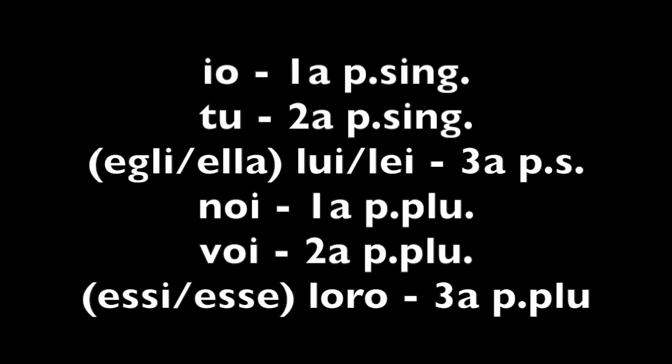Let's have a look at all the personal pronouns subject: Io — prima persona singolare. Tu — seconda persona singolare. Lui, lei — terza persona singolare. Noi — prima persona plurale. Voi — seconda persona plurale. Loro — terza persona plurale.